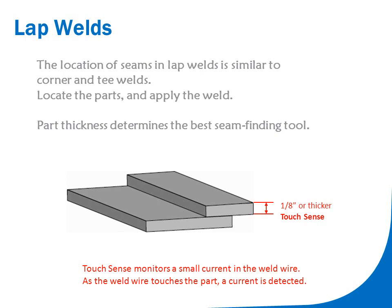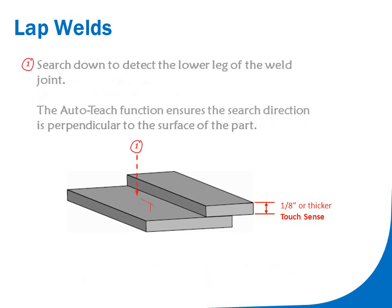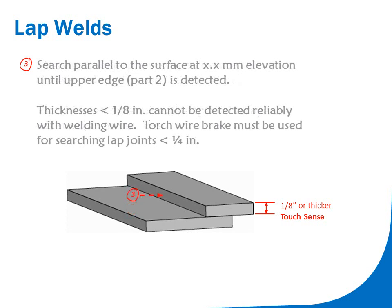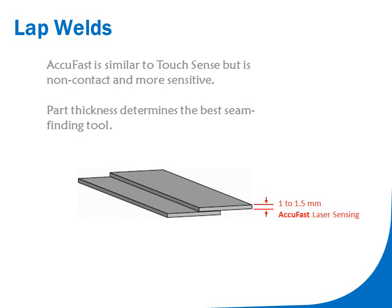Seam finding tools for lap joints are determined by the thickness of the upper plate or part. When the upper plate is 3mm or thicker, touch sensing can be used. Macro jobs make seam finding programming easier, resulting in more accurate joint location. AutoTeach automatically determines the optimal search direction perpendicular to the work surface. It also detects the work surface and moves up a specified distance before searching for the upper part, then searches for its angle and searches perpendicular during operation. AutoTeach ensures the most accurate results regardless of part orientation.